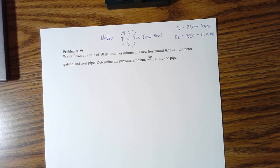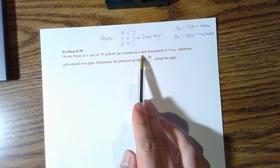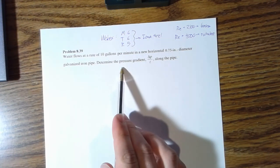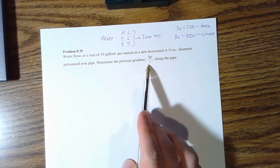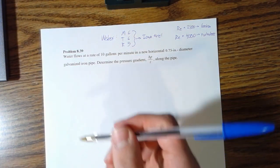So, what we're looking for: we have water flowing at a rate of 10 gallons per minute in a new horizontal 0.75 inch diameter galvanized iron pipe. Determine the pressure gradient, or change in pressure per unit length along the pipe.